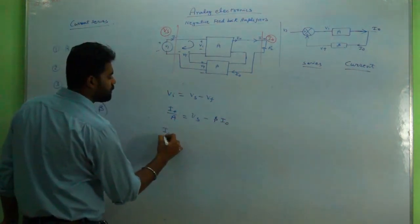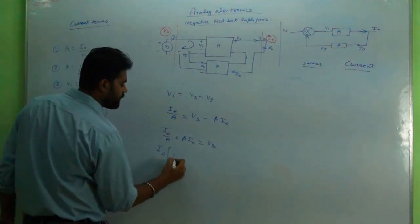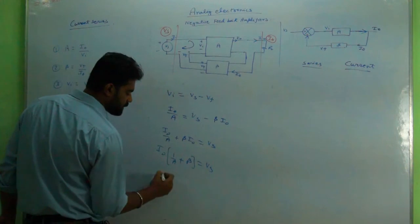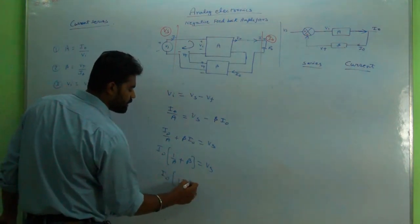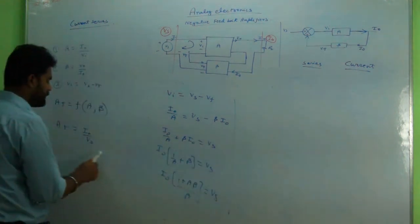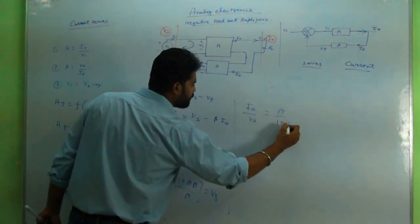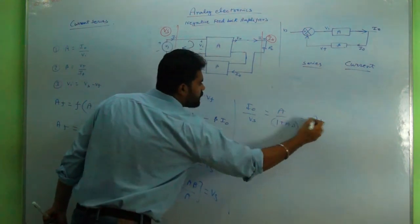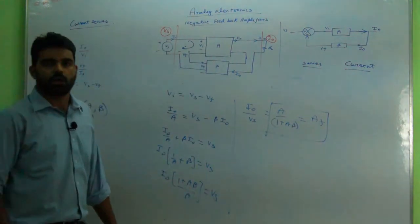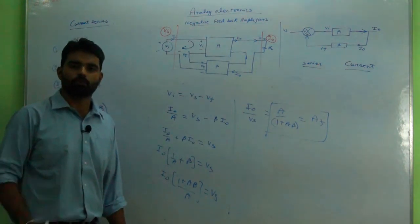So I0 upon A plus beta times I0 equals VS. Taking I0 common: I0 times (1 upon A plus beta) equals VS. Rearranging, I0 times (1 plus A·beta) upon A equals VS. Therefore I0 upon VS equals A upon (1 plus A·beta). That is AF — the first proof of amplification with feedback. Next will follow input and output impedances.